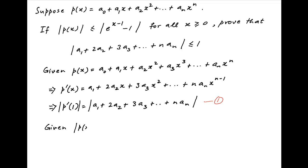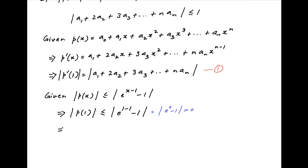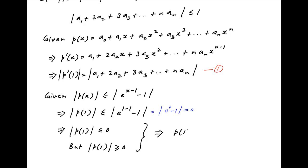We are also given that |p(x)| ≤ |e^(x-1) - 1|. Replacing x with 1, we get |p(1)| ≤ |e^(1-1) - 1|, which equals |e^0 - 1|, which equals 0. Therefore |p(1)| ≤ 0. But we know that the modulus of any number is always greater than or equal to 0. Both inequalities are satisfied only when |p(1)| = 0, which implies p(1) = 0. Let's call this Result 2.